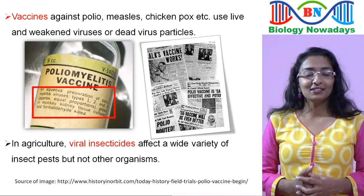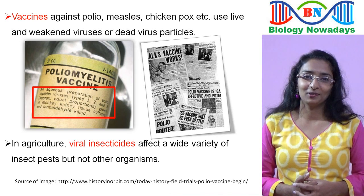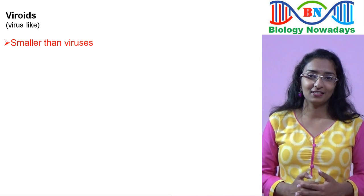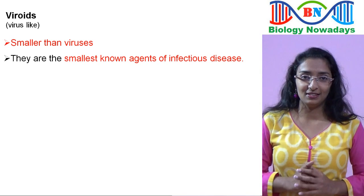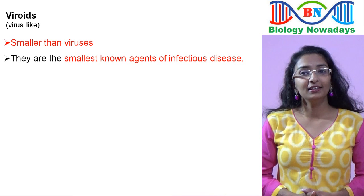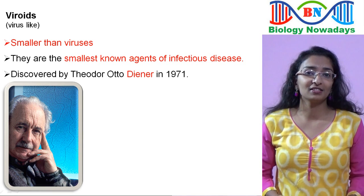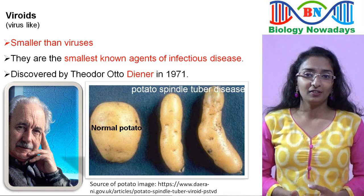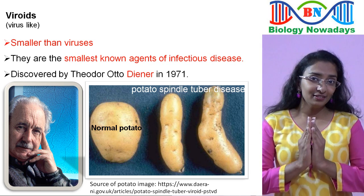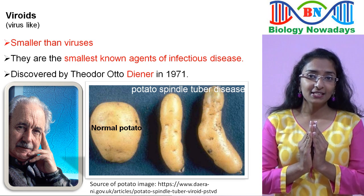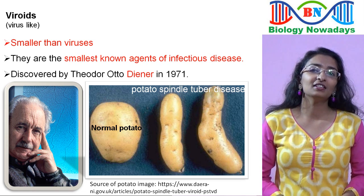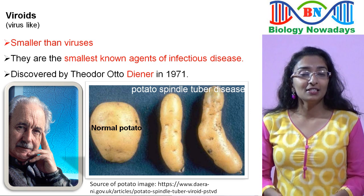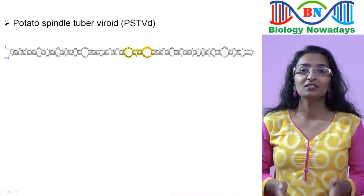That's all about viruses in this video. Now let's learn about viroids. Viroid means virus-like. They are smaller than the smallest virus and are the smallest known agents of infectious disease. They were discovered by Diener in 1971 when he was researching what causes potato spindle tuber disease. The affected potatoes were spindle-shaped — narrow and tapering at the ends and bulging at the centre. He found it was caused by a viroid 80 times smaller than the smallest virus, later named the potato spindle tuber viroid.